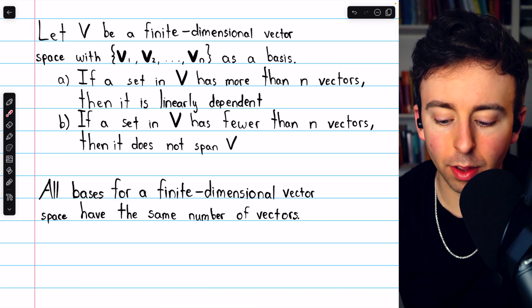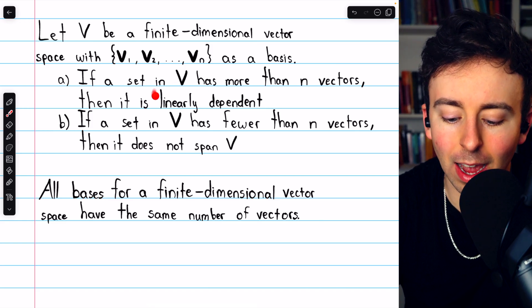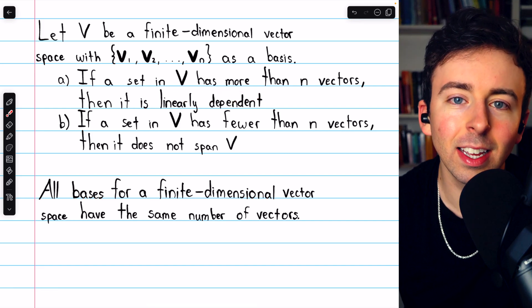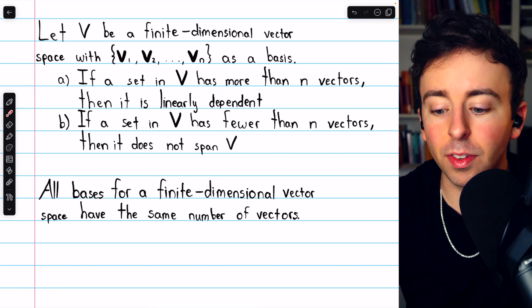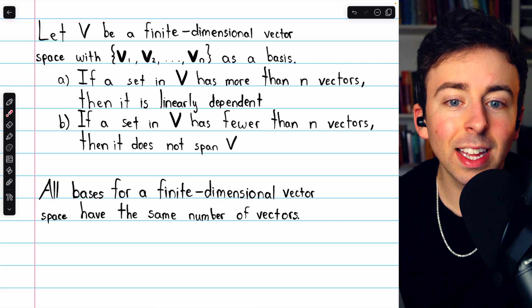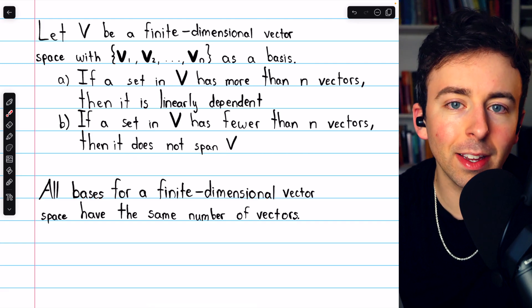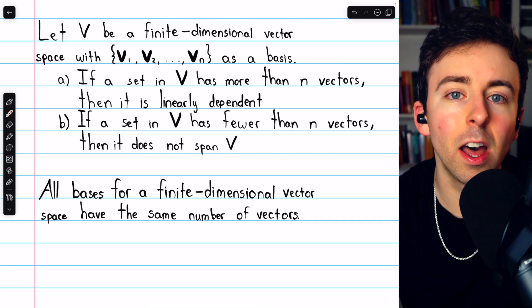Every basis will have that same number of vectors. Because if we had a set with more vectors, that set would have to be linearly dependent, hence not a basis. If the set had fewer vectors, then it couldn't possibly span the space. Hence, once again, not a basis.